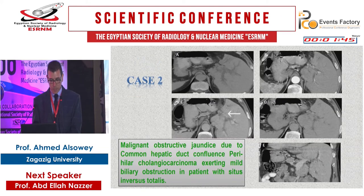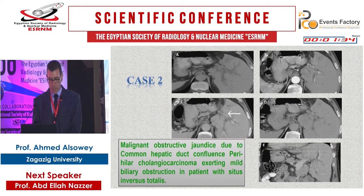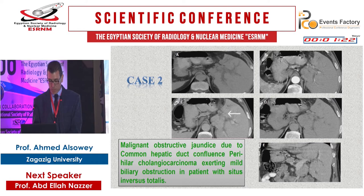Another case of situs inversus totalis showing dilatation of the biliary ducts with a mass at the confluence of both right and left hepatic ducts. This is a malignant obstructive jaundice due to common hepatic duct confluence, presenting as peri-hilar cholangiocarcinoma with mild biliary obstruction and ascites on first hospitalization.